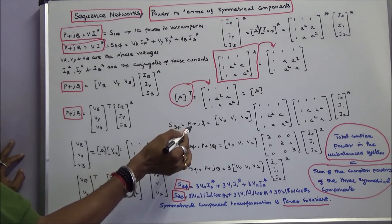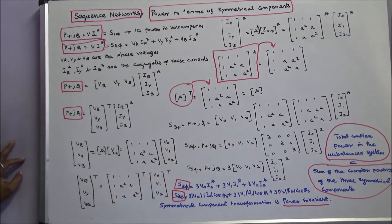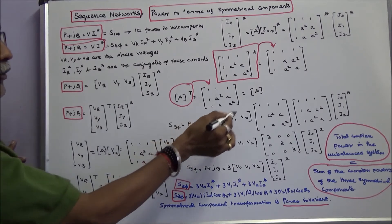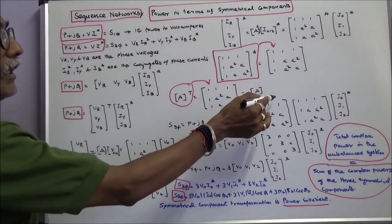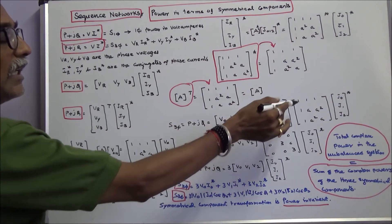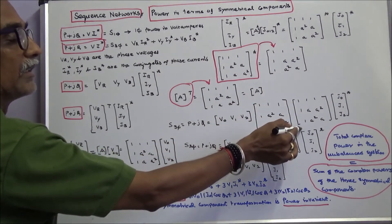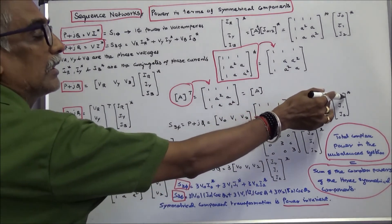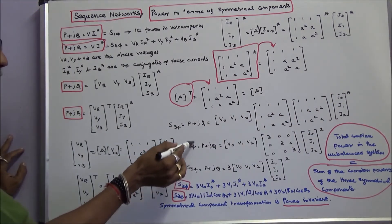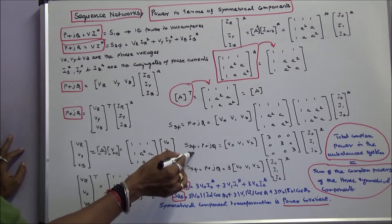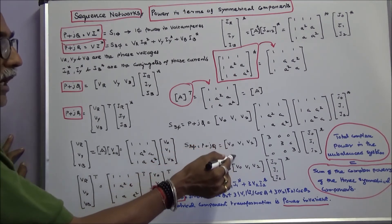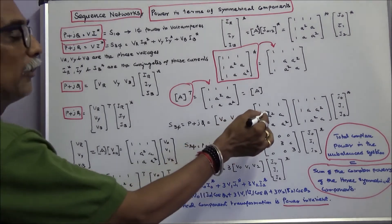Therefore, three-phase apparent power P plus jQ equals V transpose — that is the sequence voltage transpose matrix — times A transpose, which equals A matrix, times the A conjugate matrix, times the sequence current conjugate matrix. Multiplying these two middle matrices together gives the result in terms of symmetrical components.